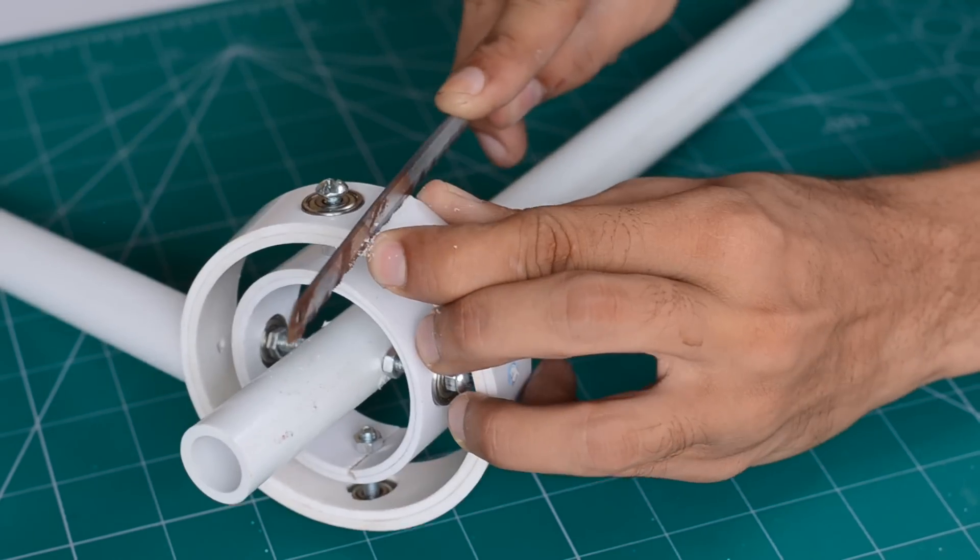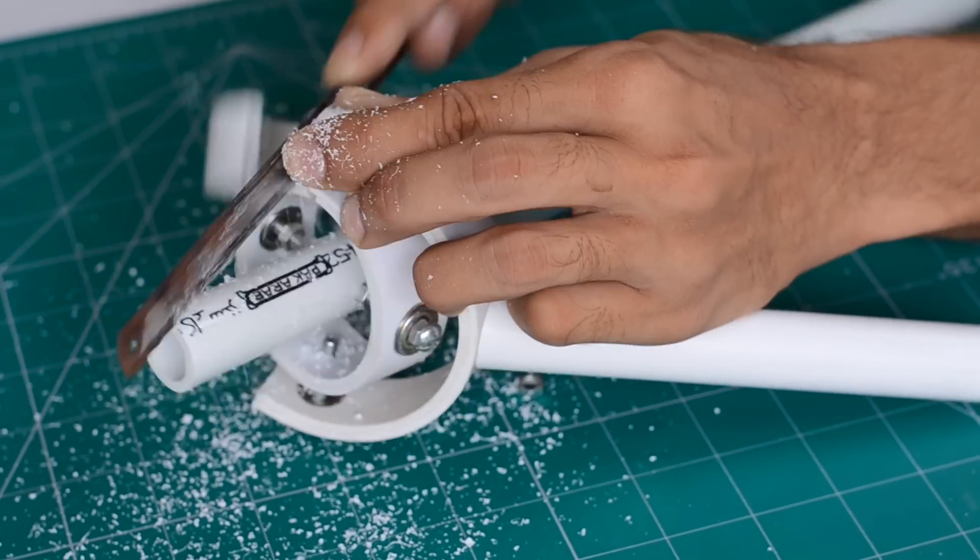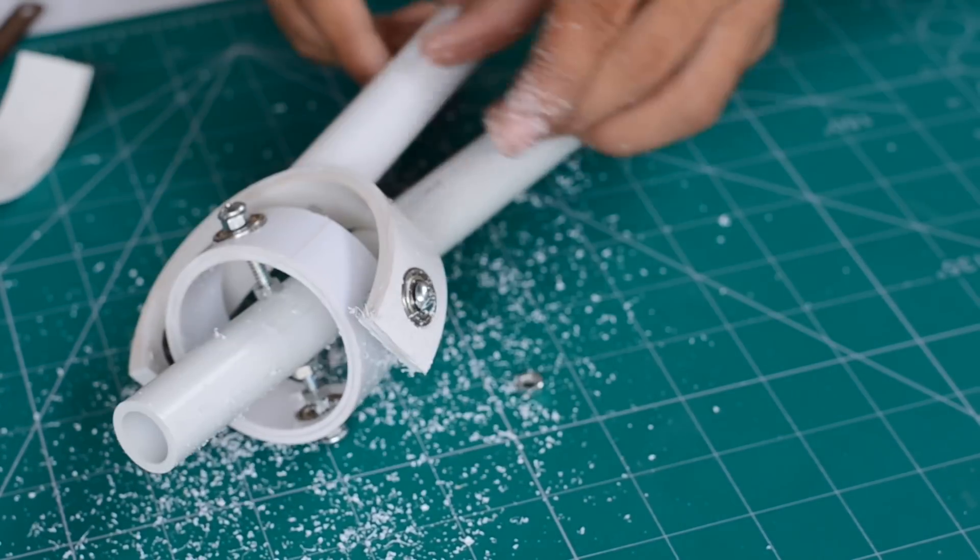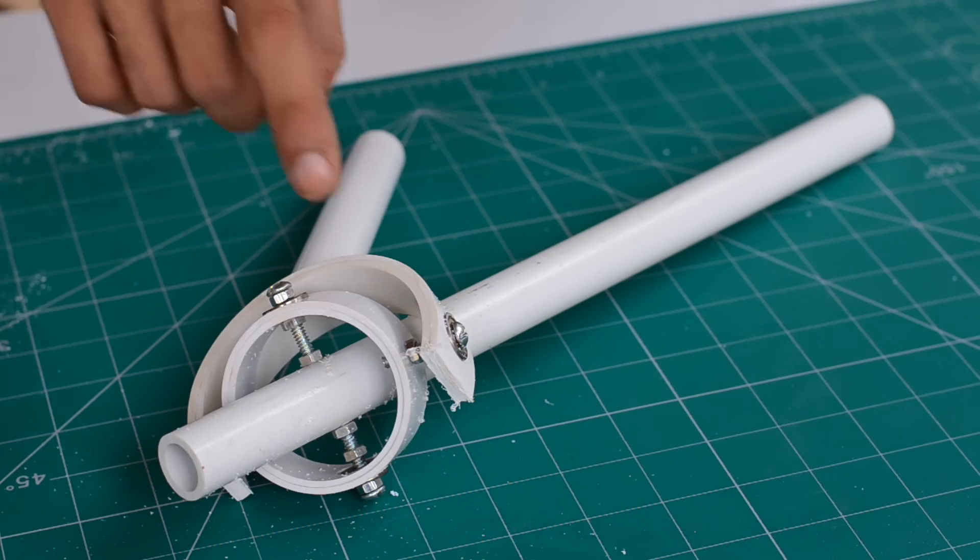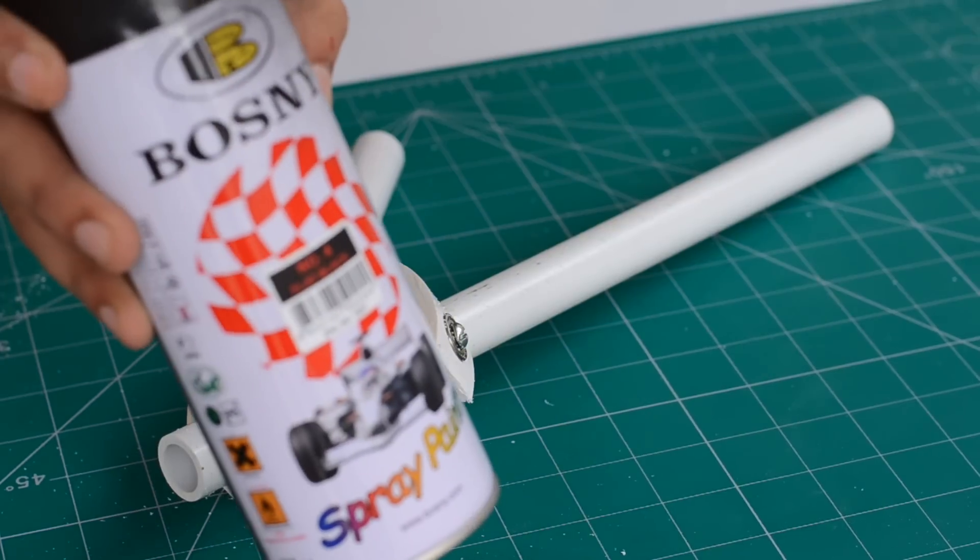Later the outer strip is cut down from the front side as this part of the strip is definitely not needed. Now to make everything look neat I painted the whole gimbal using matte black spray paint.